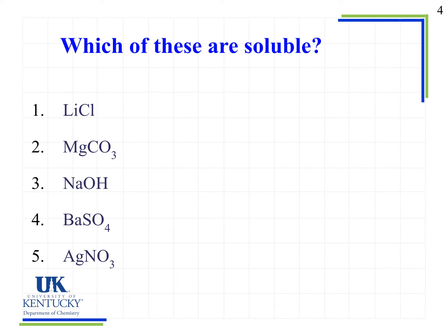Let's look at some examples. Is lithium chloride soluble or insoluble? It will actually be soluble, and we can look at it in two ways: one, the presence of lithium means it will be soluble, or if we look at the rule involving halogens, chlorine compounds are soluble and it is not one of our exceptions — silver, mercury, or lead. So this compound will be soluble.